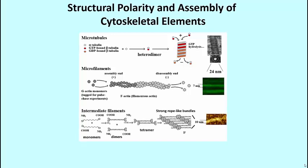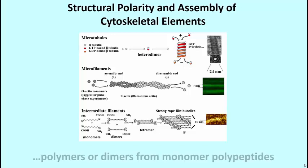And thirdly, intermediate filaments at about 10 nm in diameter are aptly named, because they're in the middle in their diameter between microtubules and microfilaments. They're formed as dimers of extended polypeptides — that simply means that these polypeptides don't have much three-dimensional or tertiary structure.